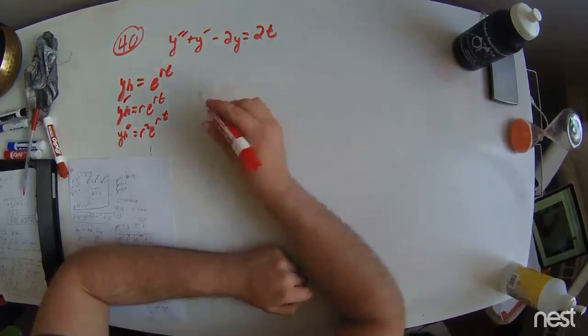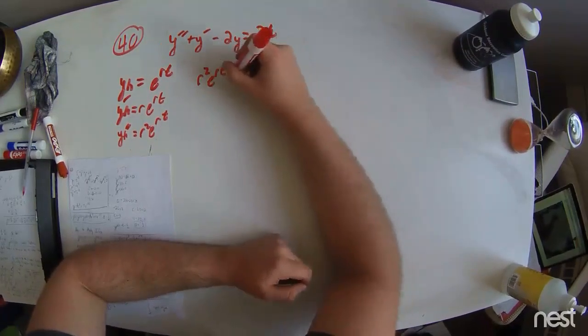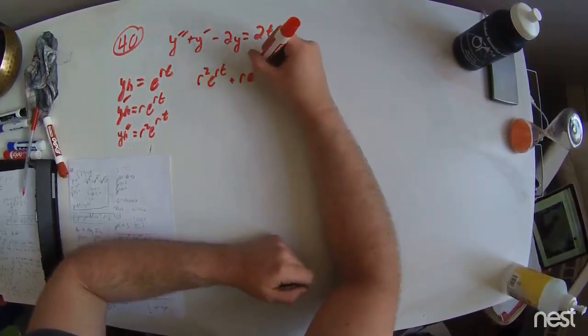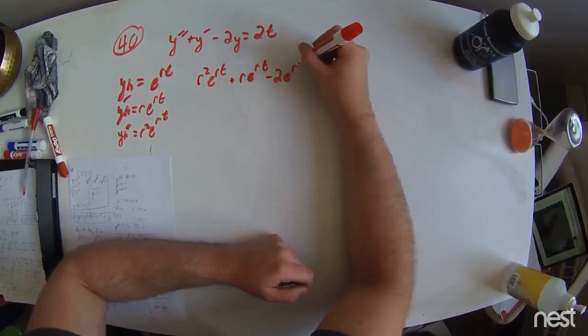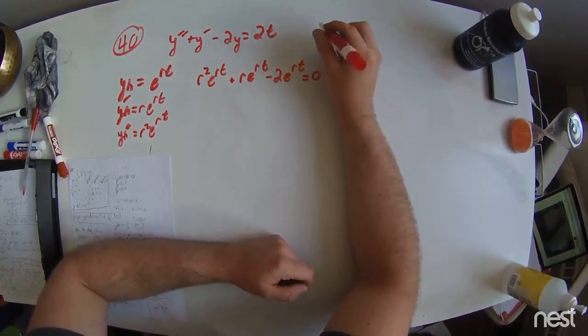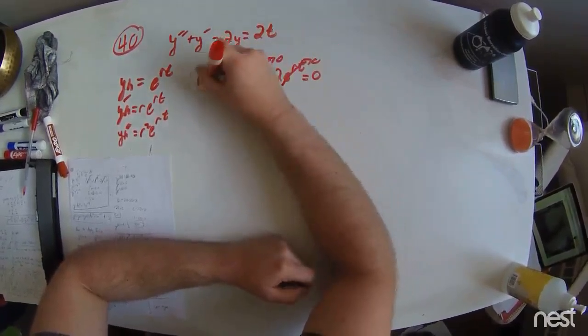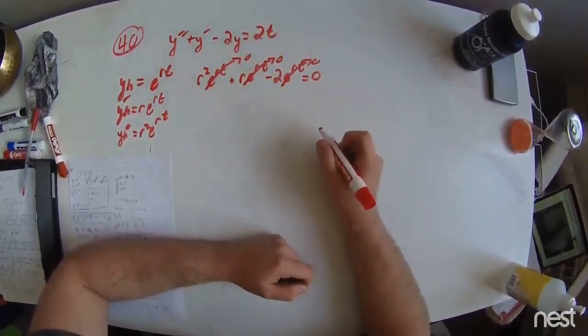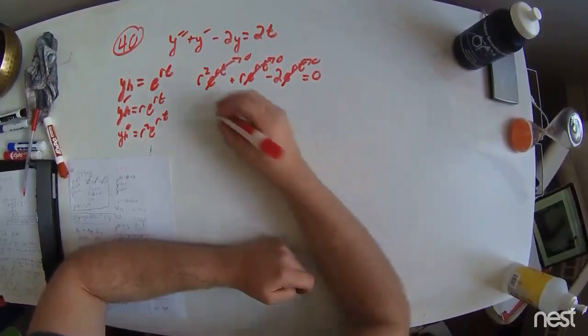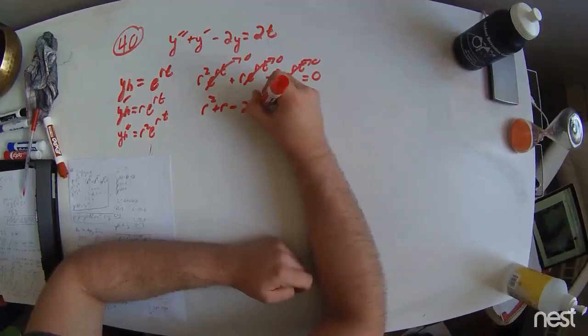Plugged into the equation above, we have r squared e to the rt plus r e to the rt minus 2 e to the rt equal to 0. Now, we can safely assume that e to the rt never equals 0, and then we can divide by it and get rid of it in this expression. So now we have r squared plus r minus 2 equals 0.